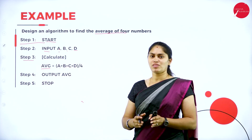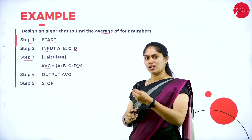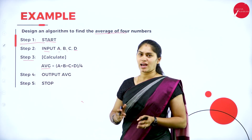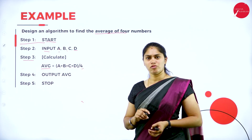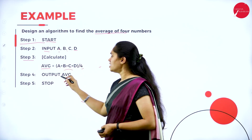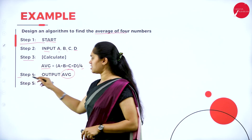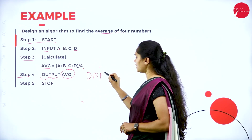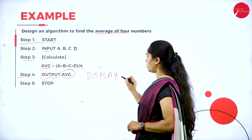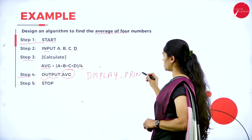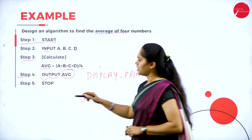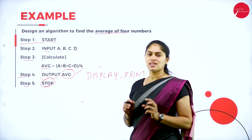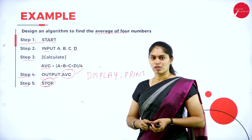For example, if A = 10, B = 20, C = 30, D = 40, then 10 + 20 + 30 + 40 divided by 4 gives the average, and that value is stored in the variable called 'average.' Step 4: Output average — you can also write display or print. Step 5: Stop. This is how we write an algorithm.